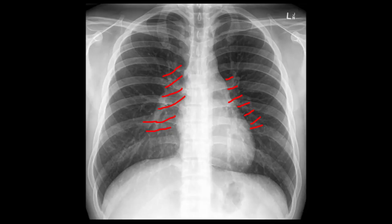The hyla consists of pulmonary blood vessels, the main bronchi, and lymph nodes, although you should not be able to see lymph nodes in a normal patient. There is an indentation in the hilum on each side called the hyla point, and normally it's higher on the left than the right.